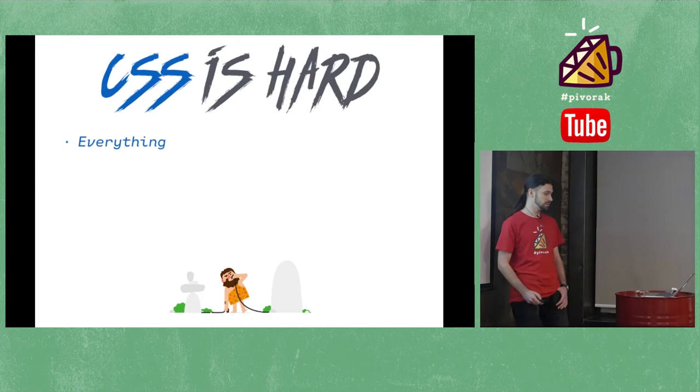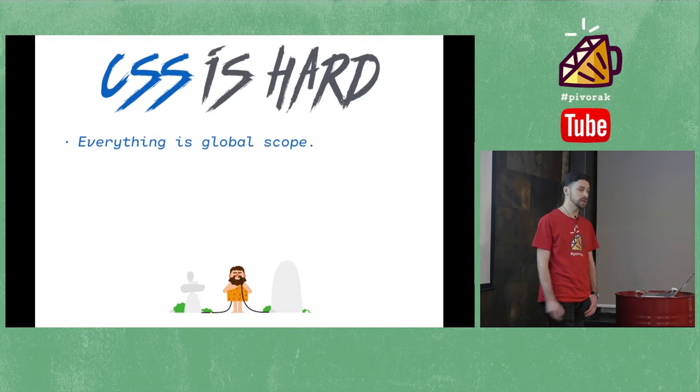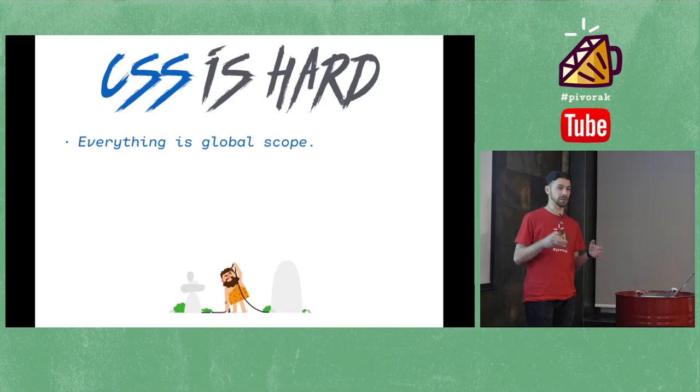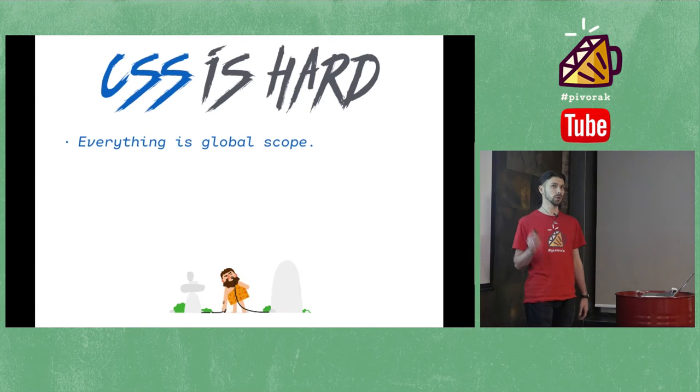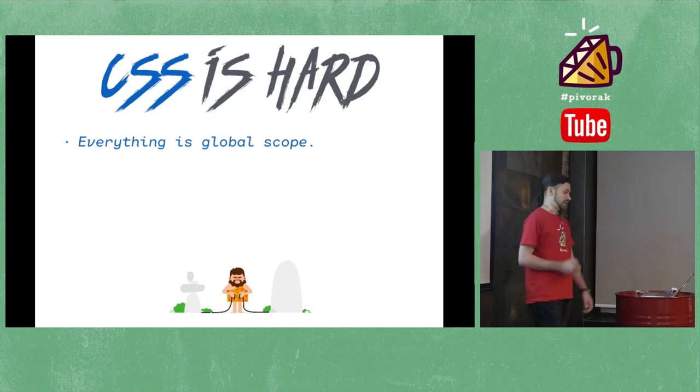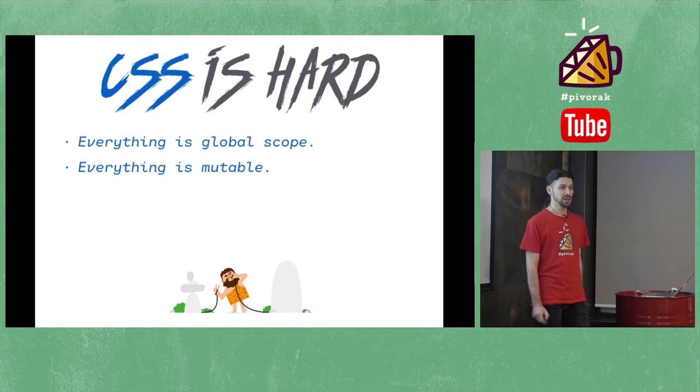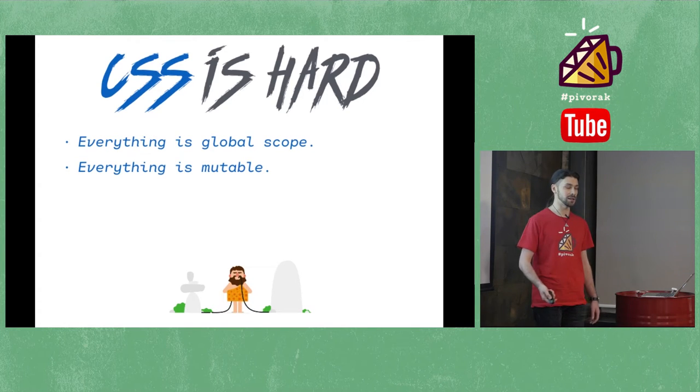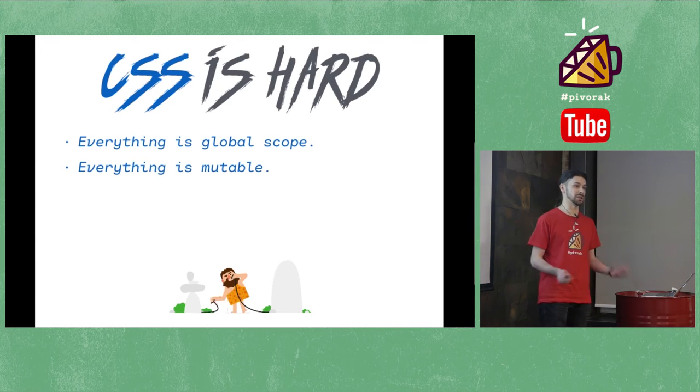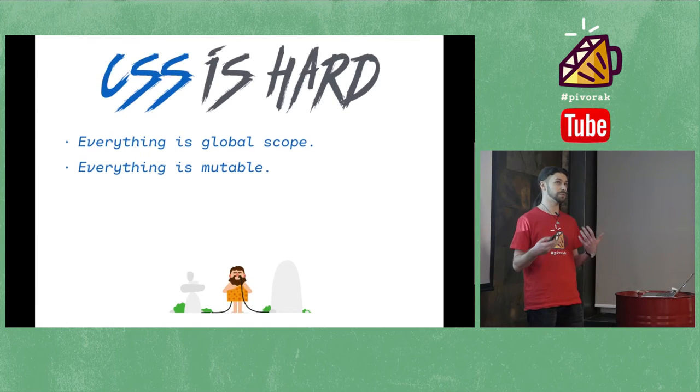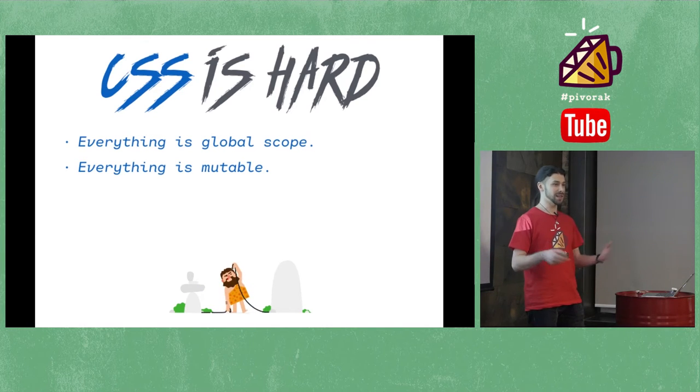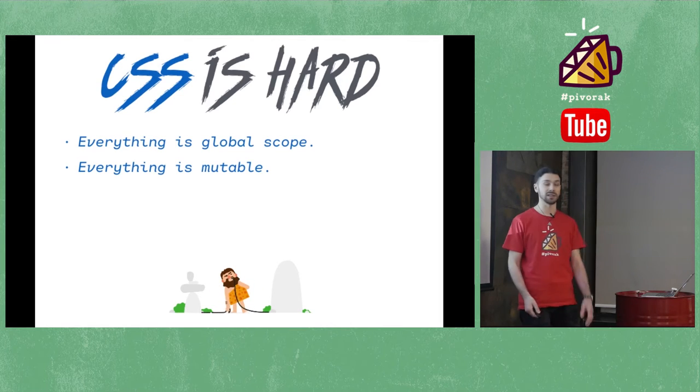So CSS is hard. One of the issues is that everything is in a global scope. It's almost impossible to write CSS code that will work just on a small piece of HTML of your page. The guys from Google are working on this with Shadow DOM, but it's not implemented in all browsers. Another issue is everything is mutable. You can write class header, and then another developer in another stylesheet will also write a class named header.